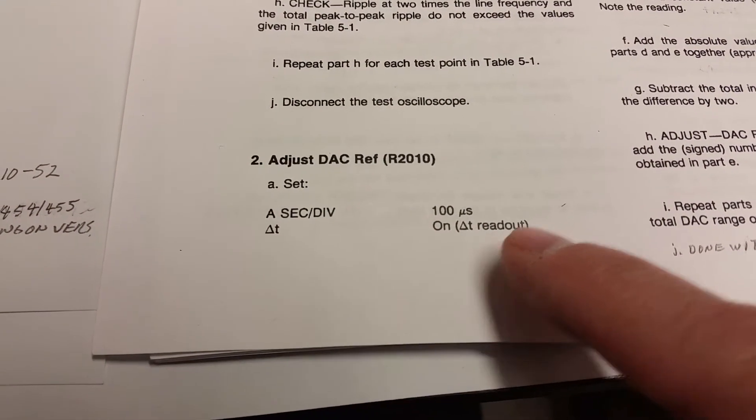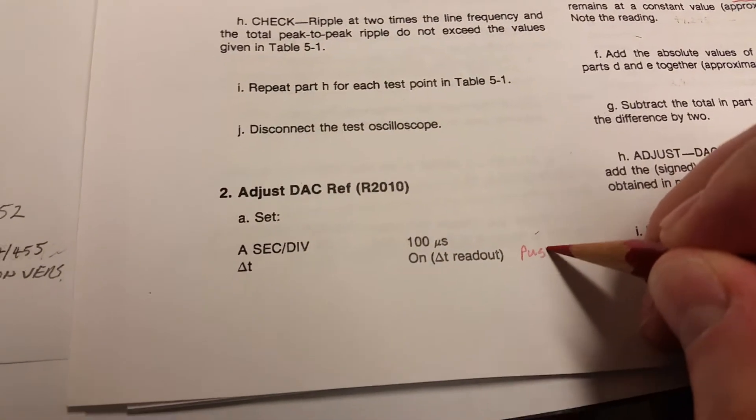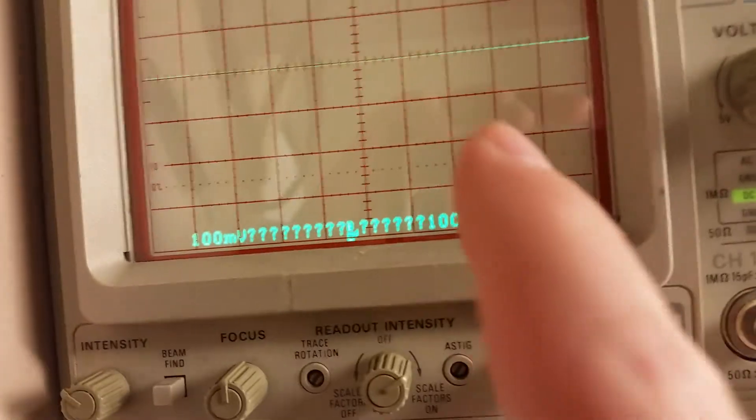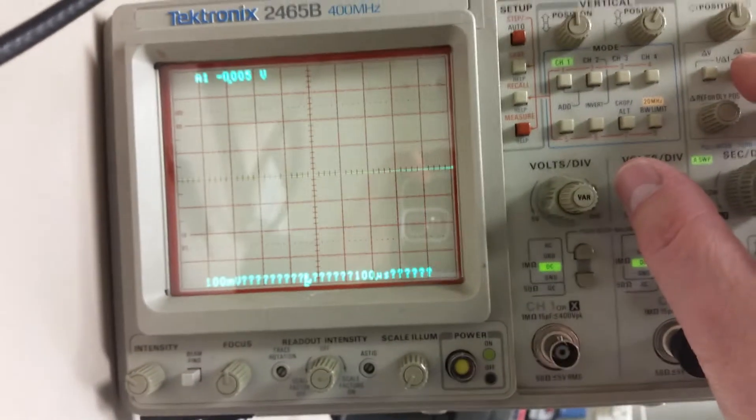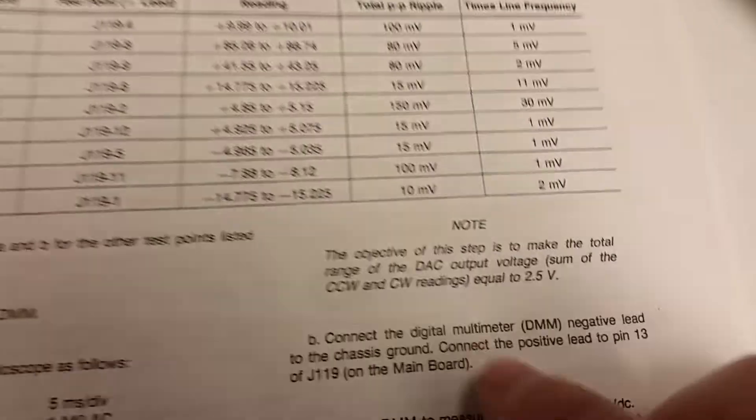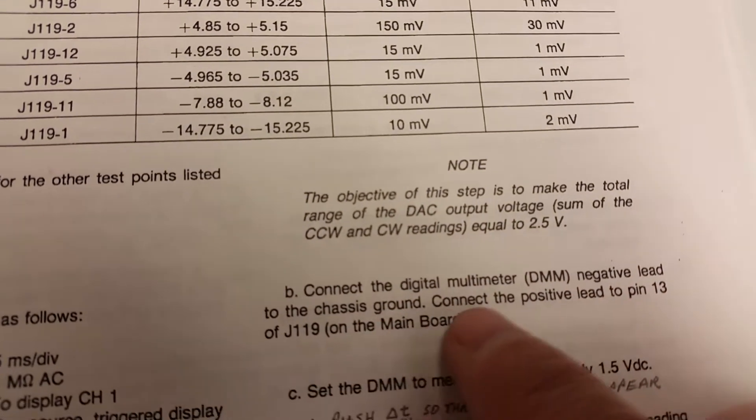To start with we'll be in paragraph two and we're going to push this Delta T right here. It's really important to do that because what that does is it sets up the cursor and you're going to be using the cursor to actually set the reference DAC. Here's the adjustment that says Delta T and you have to hit the Delta T push button. What that does is it brings up those cursors.